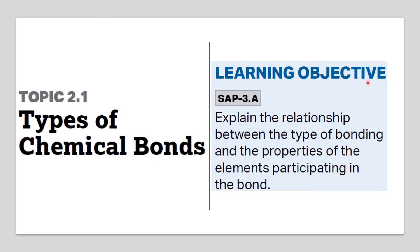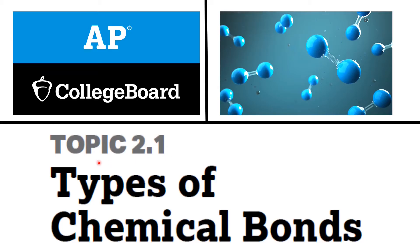The learning objective of this topic is to explain the relationship between the type of bonding and the properties of the elements participating in the bond. We will cover what is a bond, what types of bonding we are talking about, and what is the relationship between the bonding and the elements. Hello everyone, this is topic 2.1, types of chemical bonds, taken from AP Chemistry College Board.